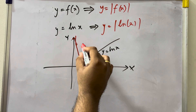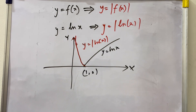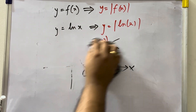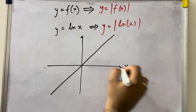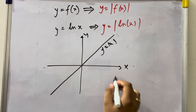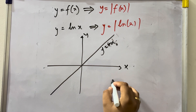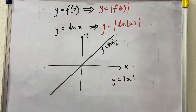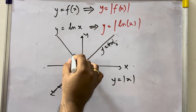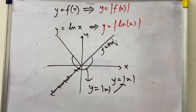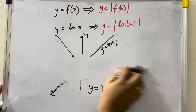So y = ln(x) combined with its reflected portion gives the graph of y = |ln(x)|. Another simple example: y = x is a straight line through origin. To get y = |x|, omit the part below the x-axis and take the mirror image of the negative part. Hence y = |x| forms a V-shape. This transformation is very simple and clear.